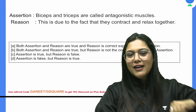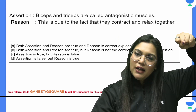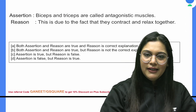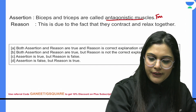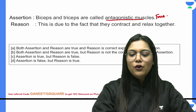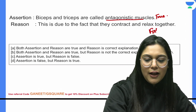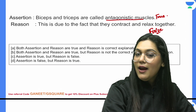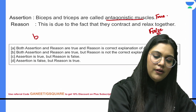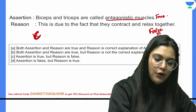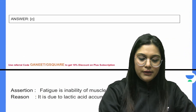Question 7: Biceps and triceps are antagonistic muscles — they cause movement in opposite directions. When one lifts, the other lowers — that is why they are called antagonistic muscles, so the assertion is true. The reason states they contract and relax together — this is false. So the answer is C option because statement B (the reason) is false.